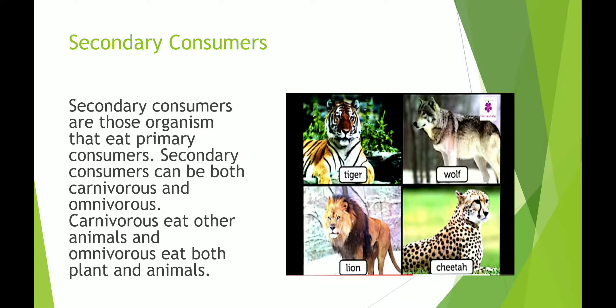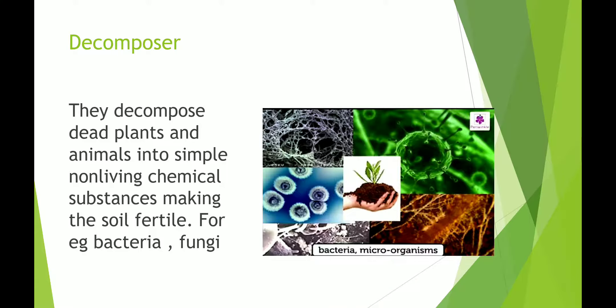Secondary consumers are organisms that eat primary consumers. Examples include lion, tiger, wolf, cheetah, and even human beings. Secondary consumers can be both carnivorous and omnivorous — carnivorous eat other animals, and omnivorous eat both plants and animals.